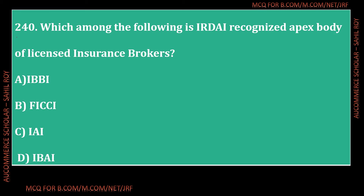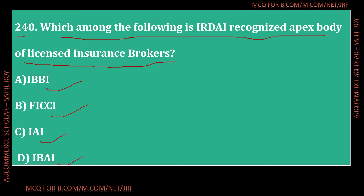Question number 240: Which among the following is the IRDAI recognized apex body of licensed insurance brokers? Options: IBBI, FICCI, IAI, or IBAI. The correct answer is Option D - IBAI, which stands for Insurance Brokers Association of India. It was incorporated under Section 25 of the Companies Act 1956. The main objective of IBAI is to promote interaction among insurance and reinsurance broker members and to encourage, promote, facilitate, and protect the interests of its members.